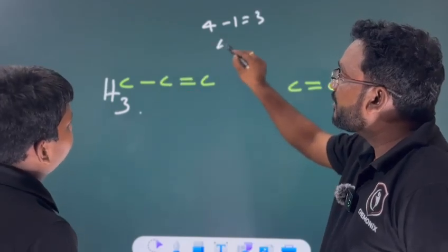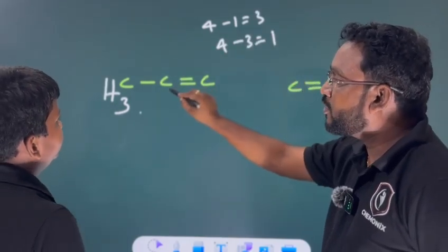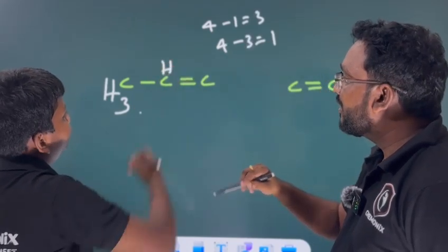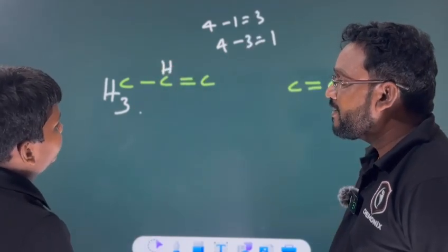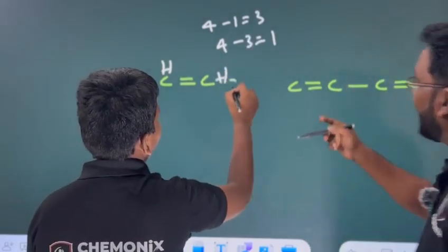Yes sir. Here, 4 minus? 3. 3 is equal to? 1. That is all. How many hydrogens should be there? 1. That is all right. And here? And here? 2. Write it. Very good buddy.